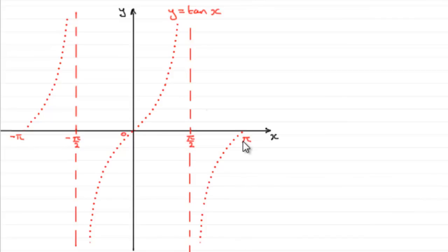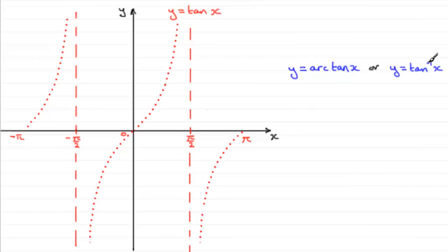When we need to work out the inverse tan of x, the notation that we would use is: y equals arctan x, or y equals tan with a little minus 1 up here, x — y equals the inverse tan of x, as we often say.